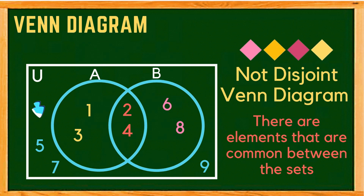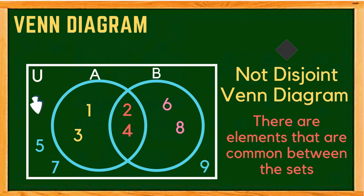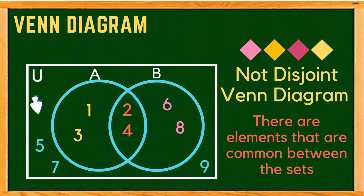When we say disjoint, it means the circles are separate from each other.